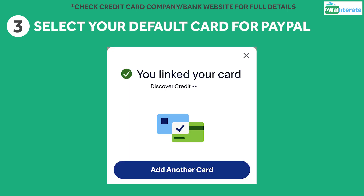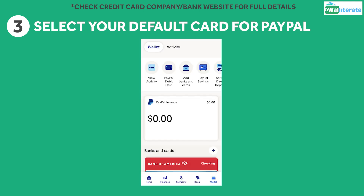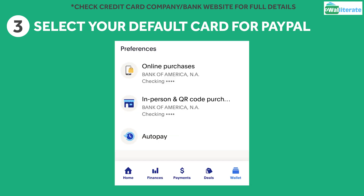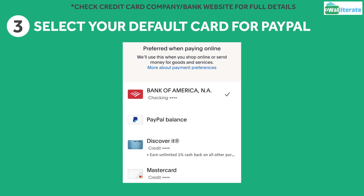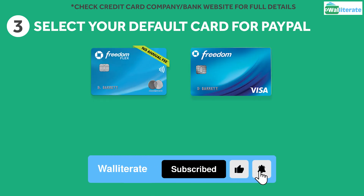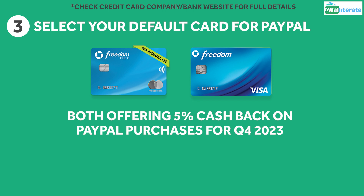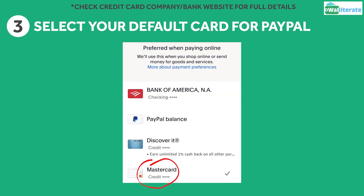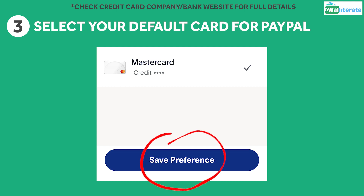Once you've finished adding your cards, you'll need to select your default card. You can return to your wallet and scroll down to the bottom where you'll see Preferences. There are two options here: your preferred card for online purchases and your preferred card for in-person and QR code purchases. Click on Online Purchases and select the card you want to use for this quarter. Right now, in Q4 of 2023, the Chase Freedom Flex card and the original Chase Freedom card are both offering 5% cashback on PayPal purchases.